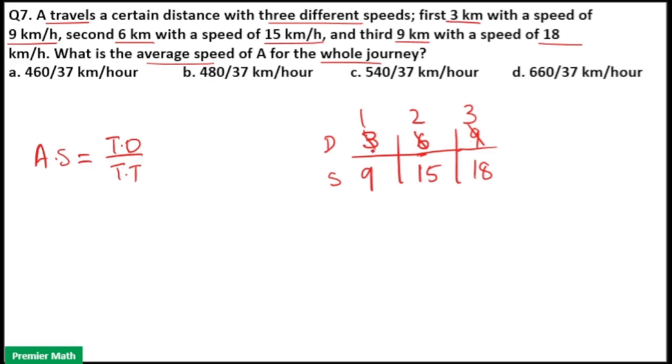Take the ratio of this distance. This is 1 is to 2 is to 3. Here, don't cancel this. Don't take the ratio of speed, because speed is not in numerator. Speed is only in denominator. You cannot take the ratio of speed here.